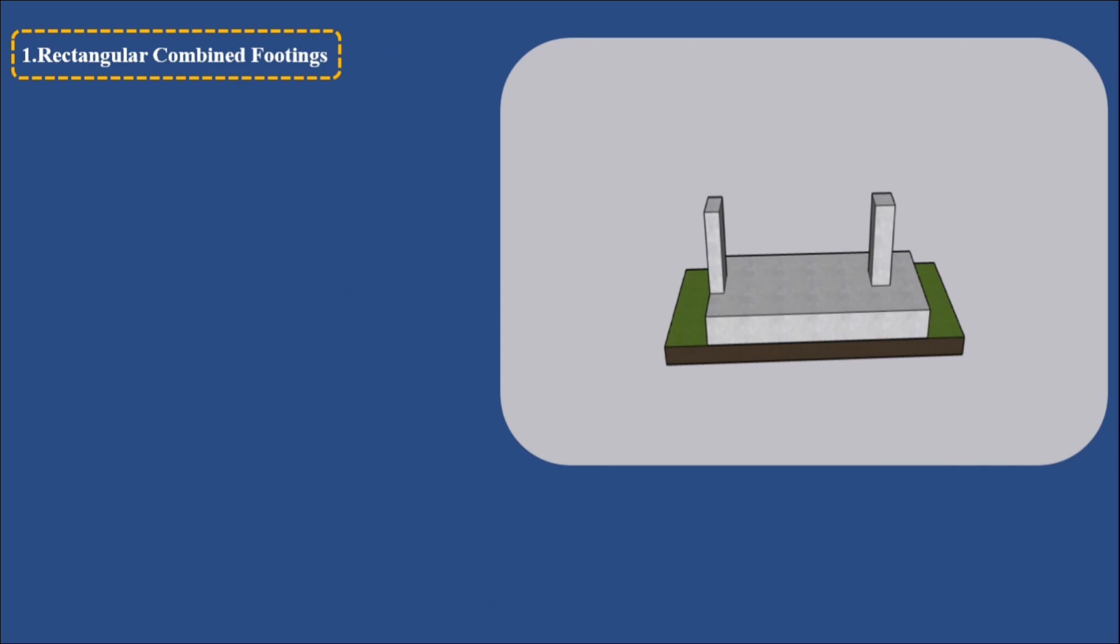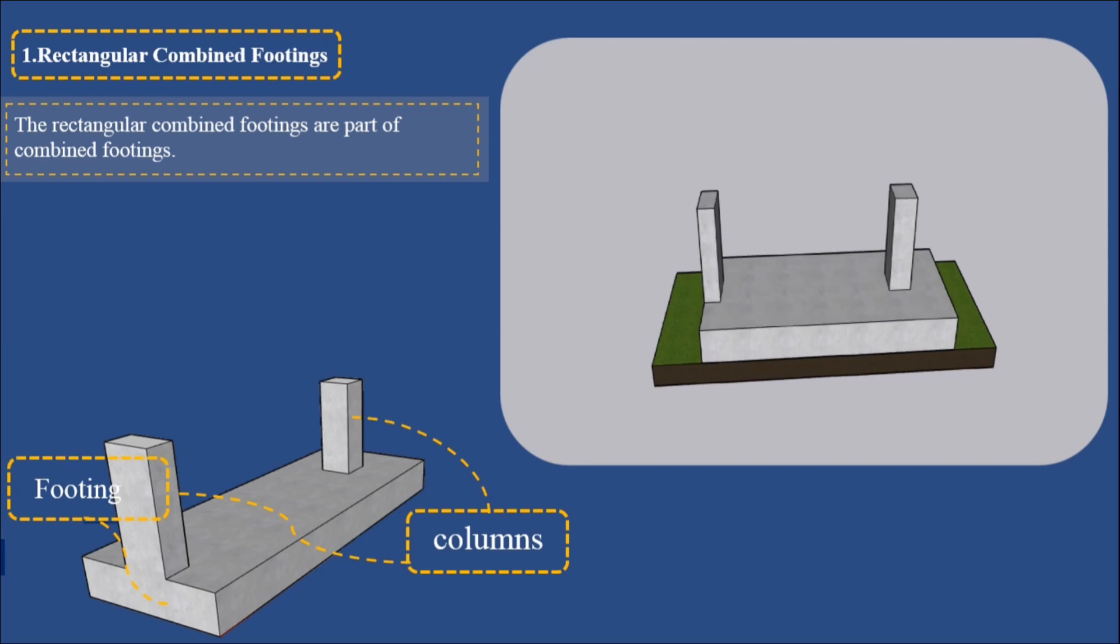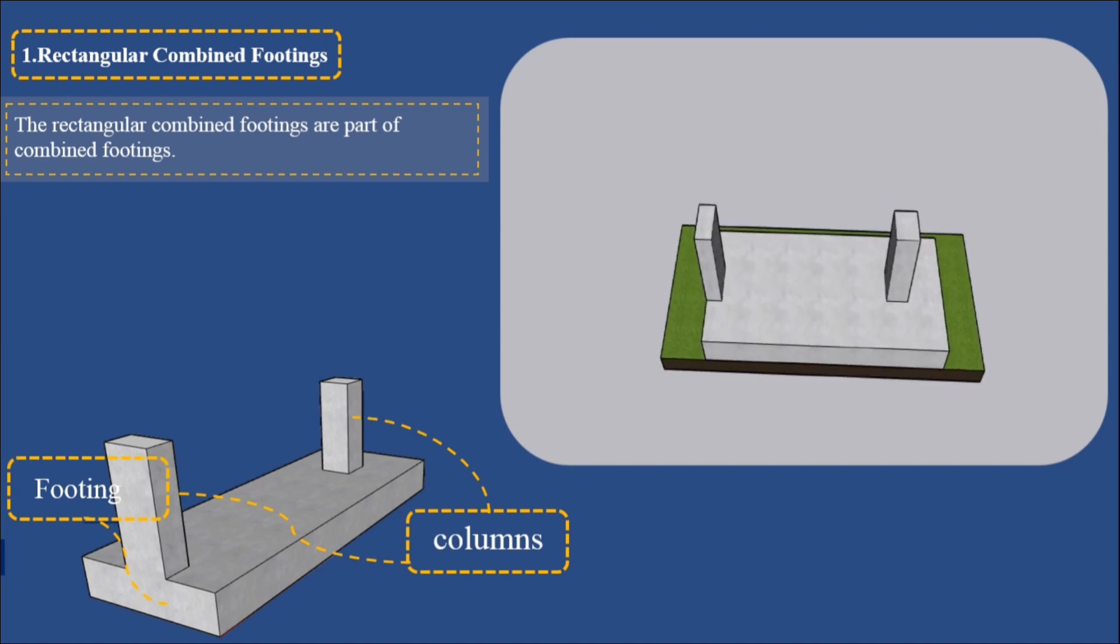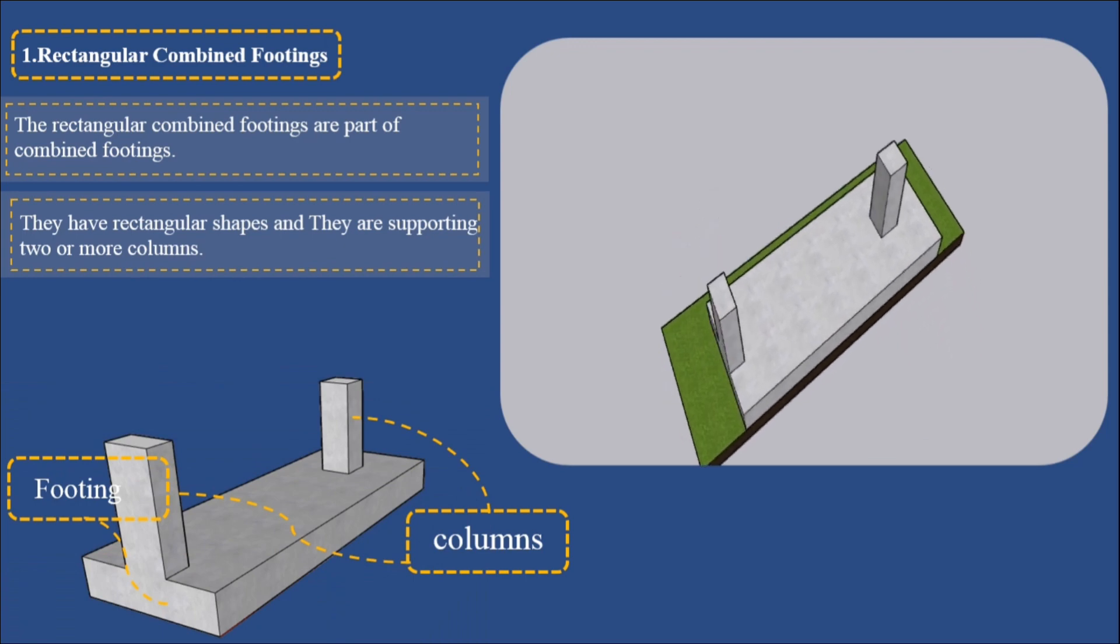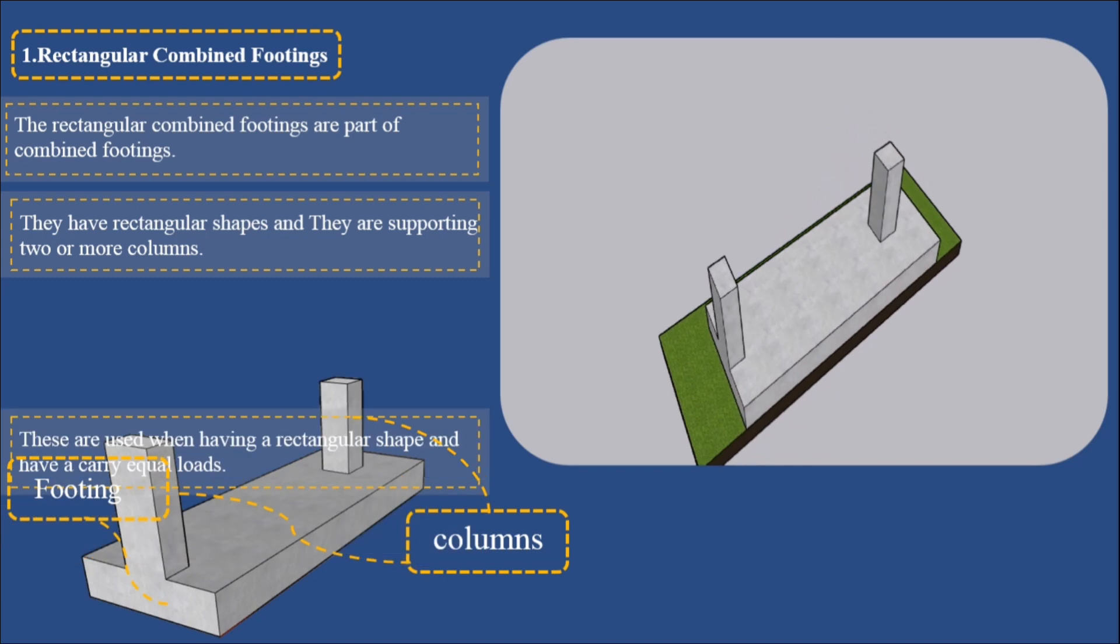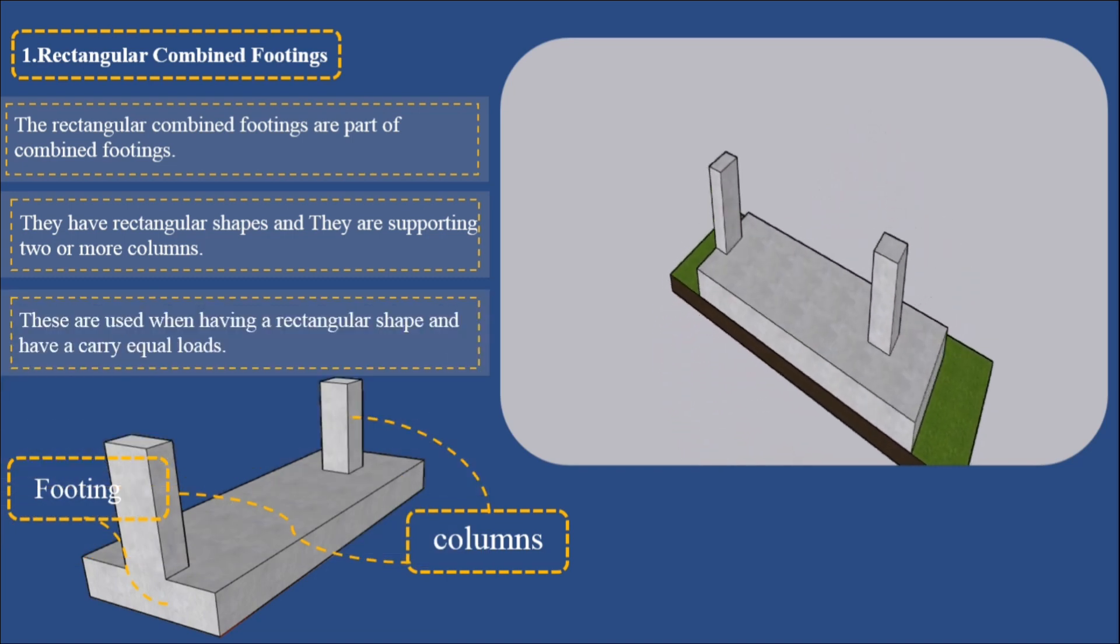1. Rectangular combined footings: The rectangular combined footings are part of combined footings. They have rectangular shapes and they are supporting two or more columns. These are used when having a rectangular shape and carrying equal loads.